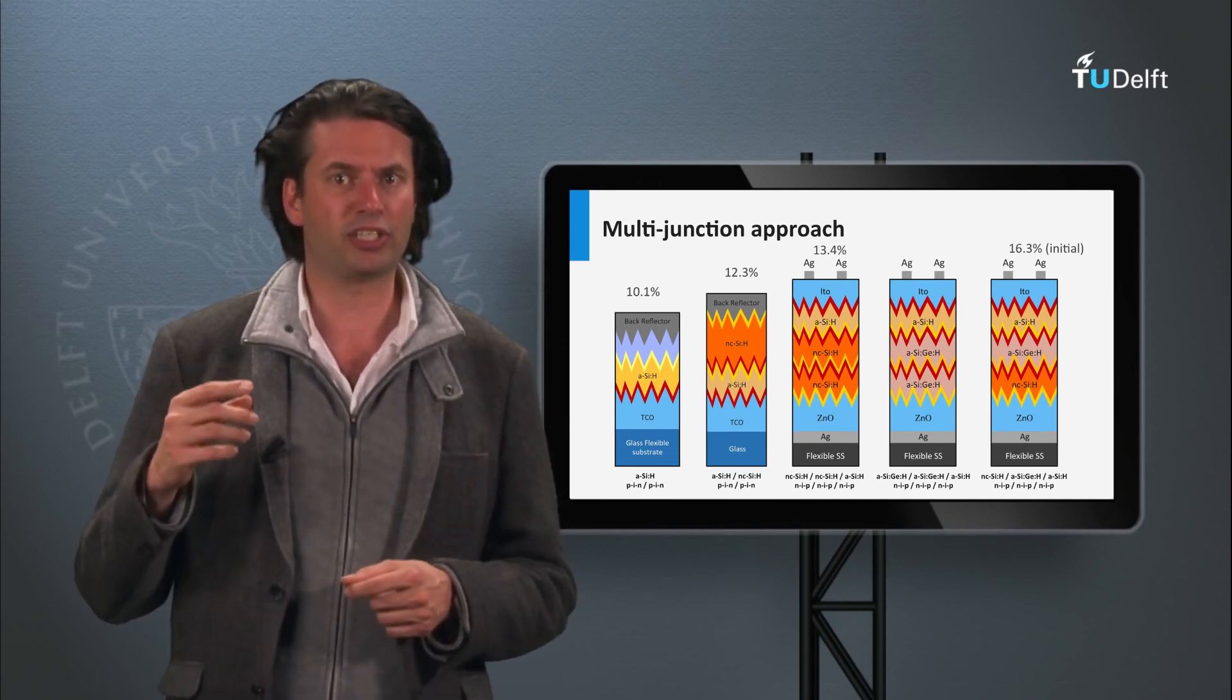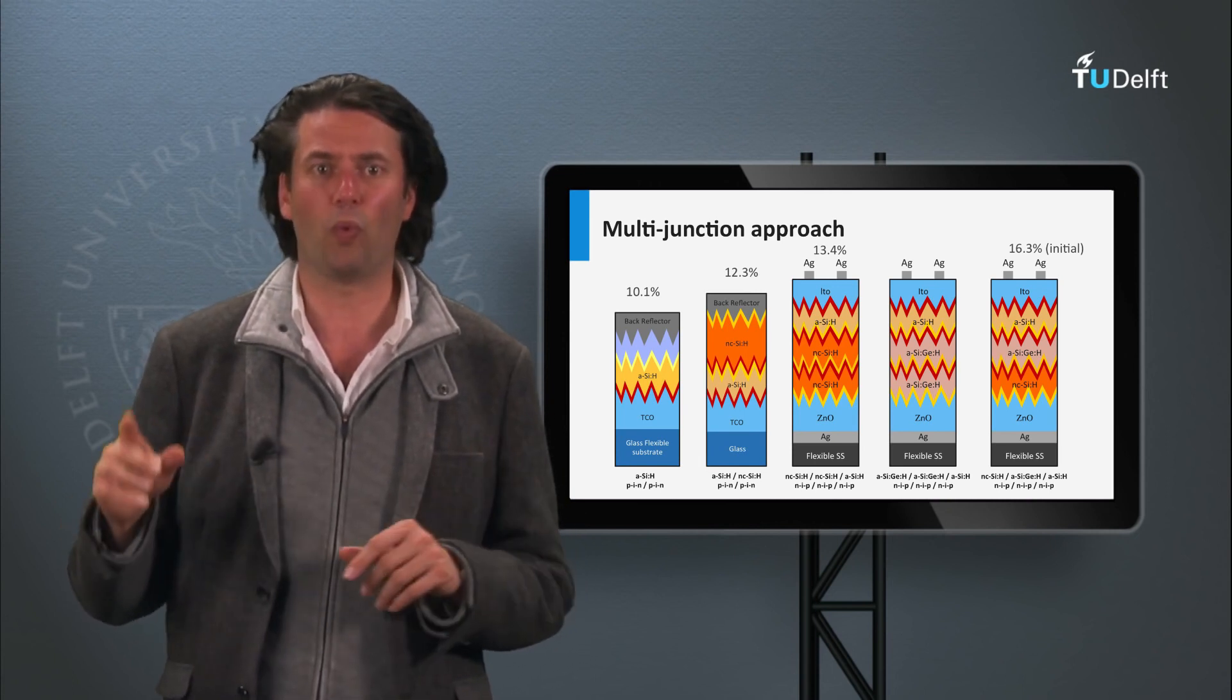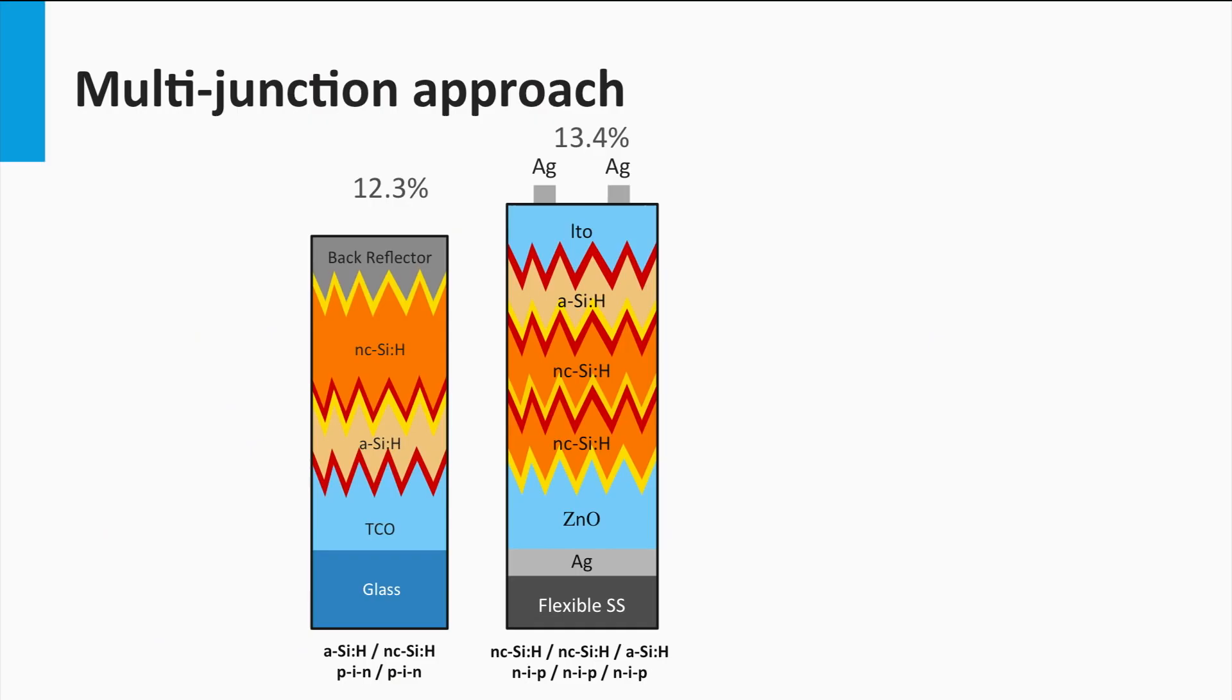If the Staebler-Wronski effect could be tackled, thin film silicon devices could achieve efficiencies well above 16%.